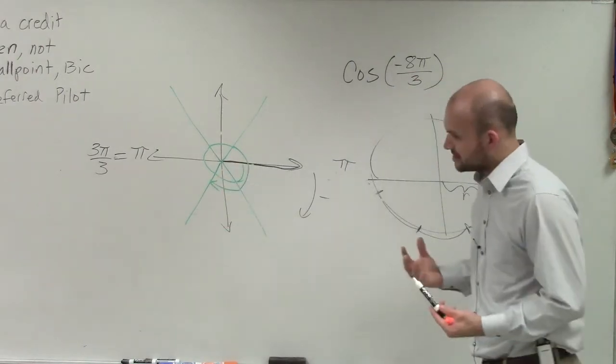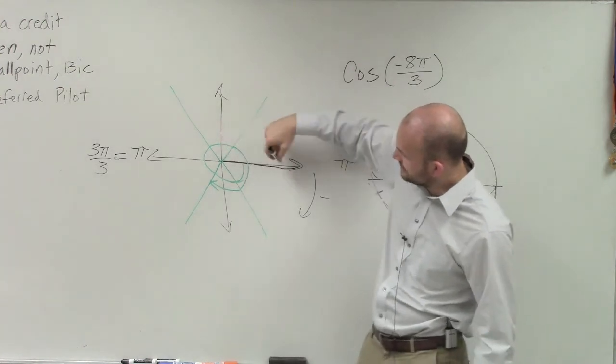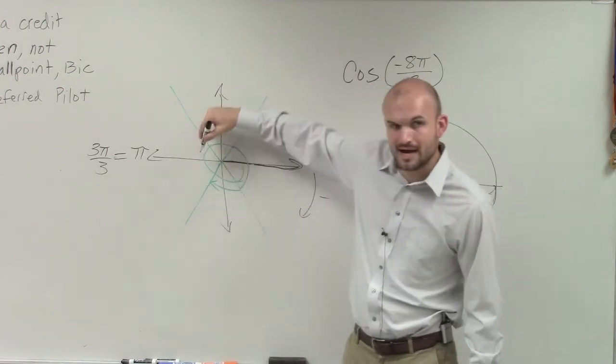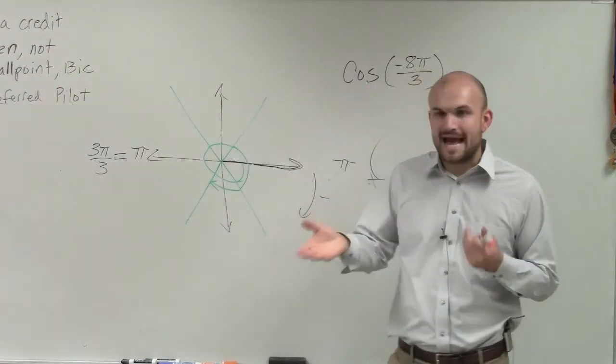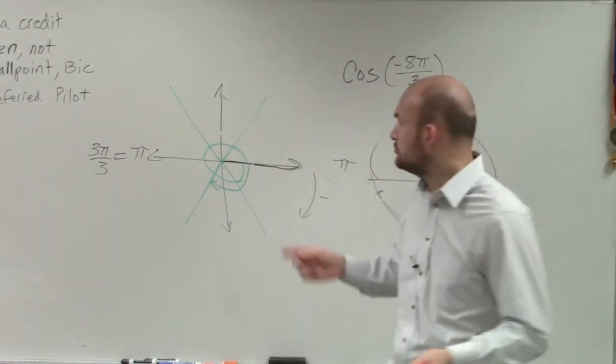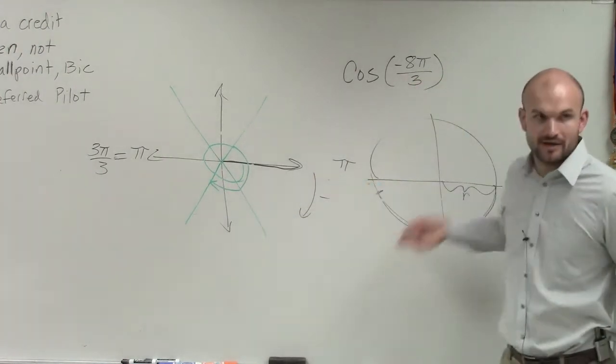So remember, when we talked about coterminal angles, for it to be coterminal angle, it has to have the same initial and same terminal side. Now, we did that by adding and subtracting 2π, because 2π is one revolution around the circle.